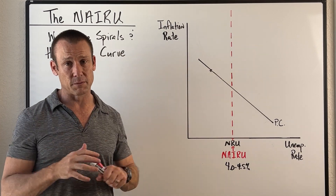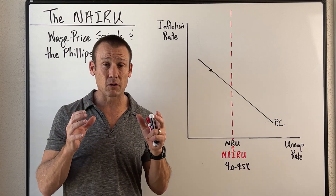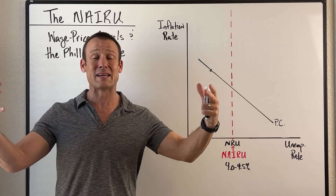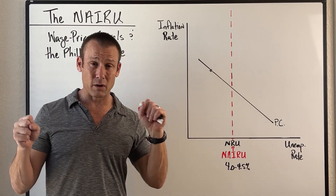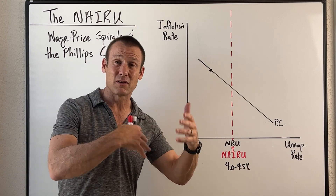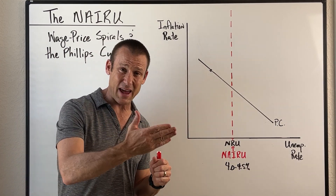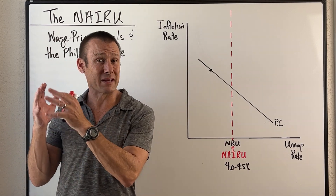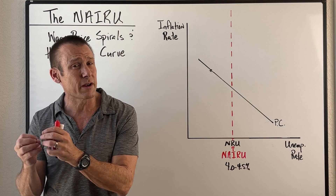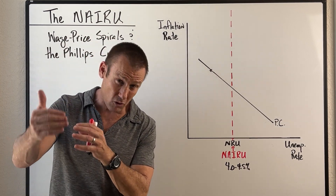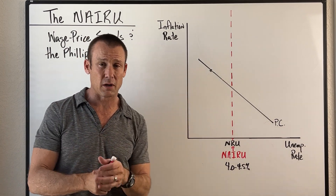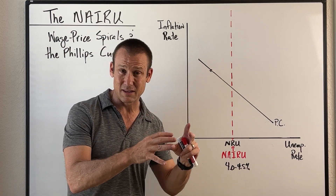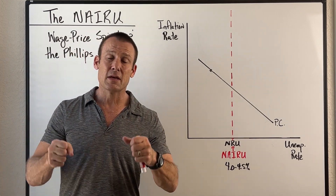Now let's get to fiscal and monetary policy. In macroeconomics, there are two general policy tools — huge policy instruments we have to try to stabilize the macroeconomy. What are they? Fiscal policy and monetary policy. Fiscal policy is a manipulation of the government's budget to try to stabilize the economy — we're really talking about changing taxes, spending, and transfer payments. Monetary policy is really about manipulating the interest rate.